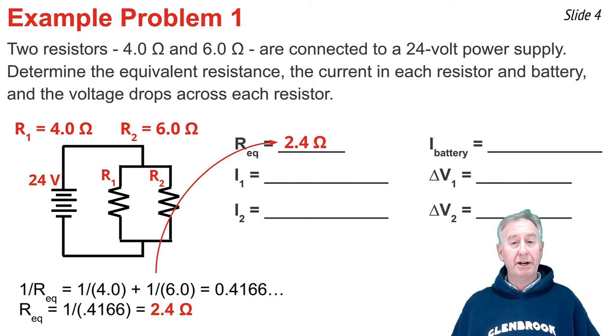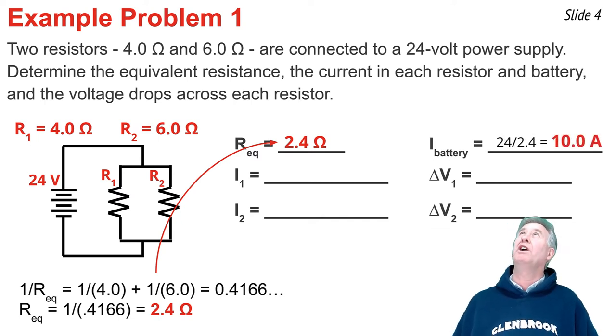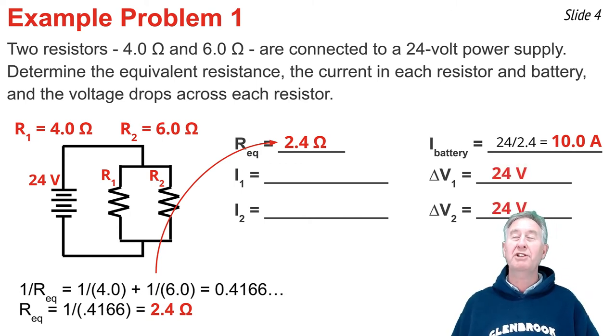I can place that in the blank. Now I want to calculate the current in the battery. It's simply the voltage of the battery divided by the total resistance. So that would be 24 divided by 2.4. That comes out to be 10 amps. To determine I₁ and I₂, I need to know the voltage across the branches and divide by the resistance in those branches. But I don't know the voltage across the branches yet, but it's easy enough to figure out if it's a 24-volt battery, then the charge will lose 24 volts in both of the branches.